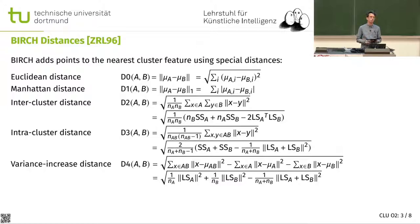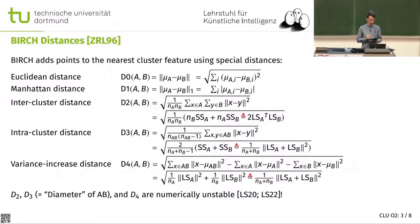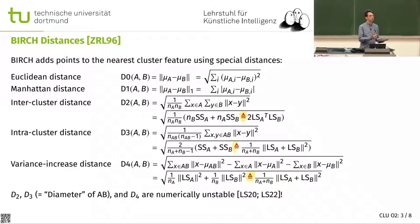Variance increase is one of the most interesting distance measures. Inter- and intra-cluster distances are also interesting. All of the more complex ones have the same problem of numerical accuracy, because we have a subtraction of values that tends to be similar, leading to what is called catastrophic cancellation in floating point. This wouldn't be an issue with integers only, but eventually we need floats to compute square roots.